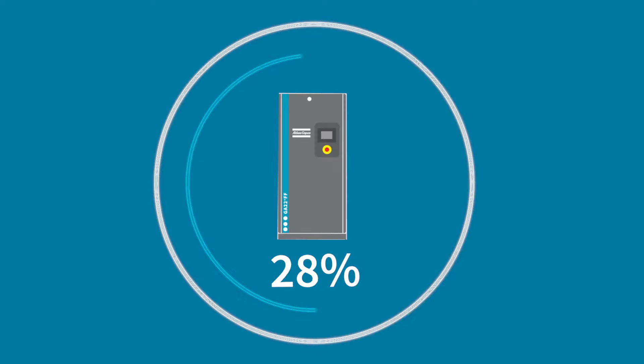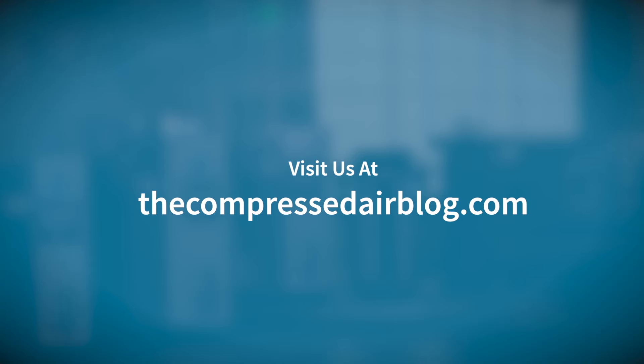The higher the percentage, the better the compressor is at converting electrical energy into compressed air. That's the basics of isentropic efficiency, and for more on this topic and all things compressed air, visit us at the Compressed Air Blog.